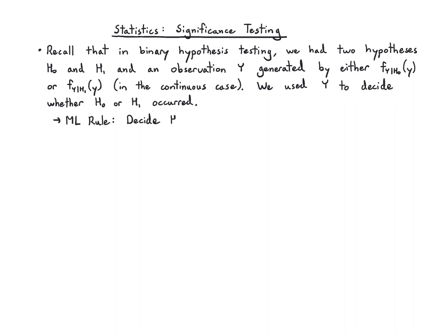We were using Y to decide whether H0 or H1 had actually occurred. For instance, the ML rule decides H1 if, when plugging into these likelihoods, we saw that f of Y given H1 was larger.